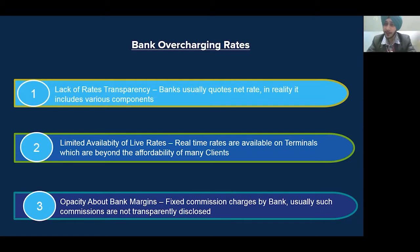Another point is limited availability of live rates. What clients do is just check Google for getting the rate. But the real-time rates are traded on terminals like Thomson Reuters and Bloomberg LLP, which are beyond the affordability of many clients. Another point is opacity about bank margin — the fixed commission charged by banks from their clients on each and every transaction.